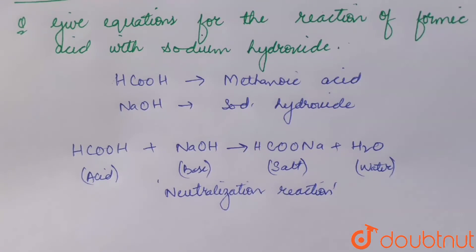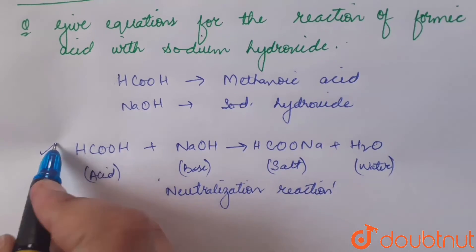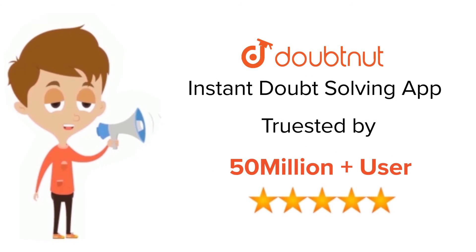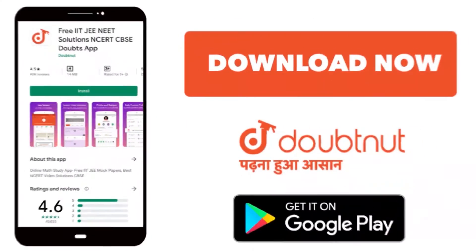So this is neutralization reaction or acid-base reaction. This is the equation for reaction of formic acid with sodium hydroxide. Thank you. For class 6-12, IIT-JEE and NEET level, trusted by more than 5 crore students, download Doubtnet app today.